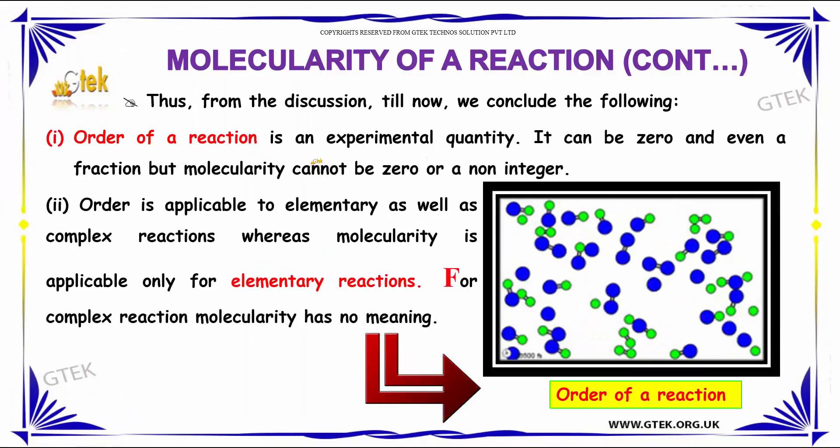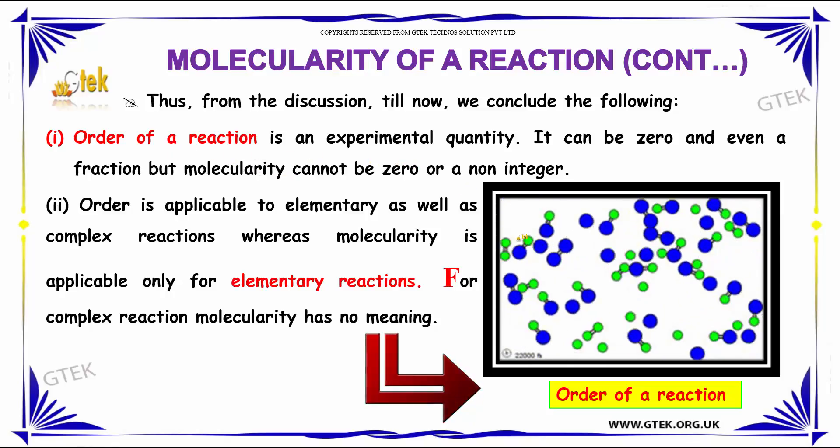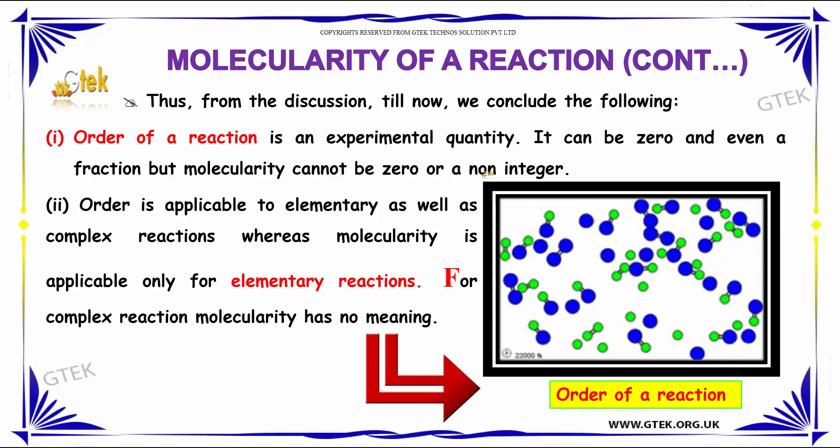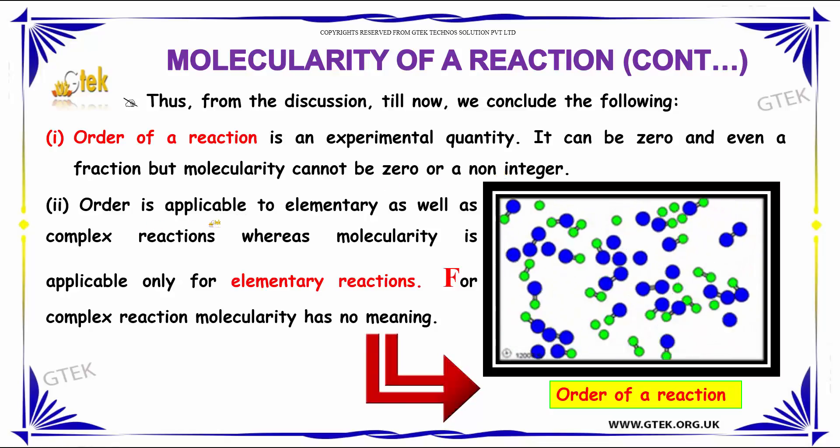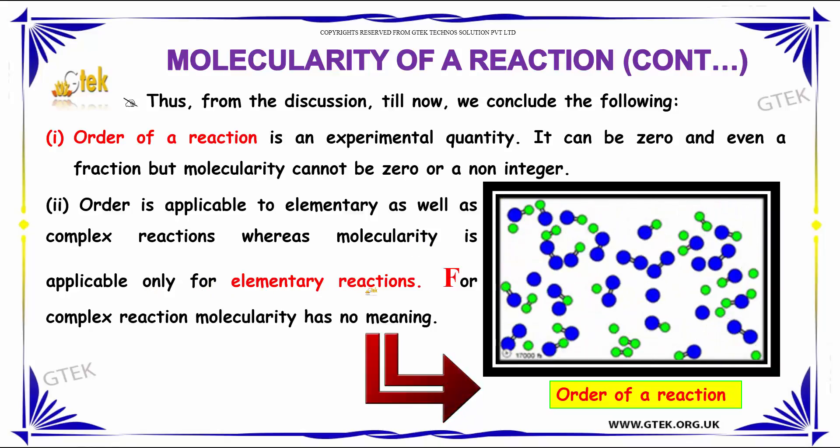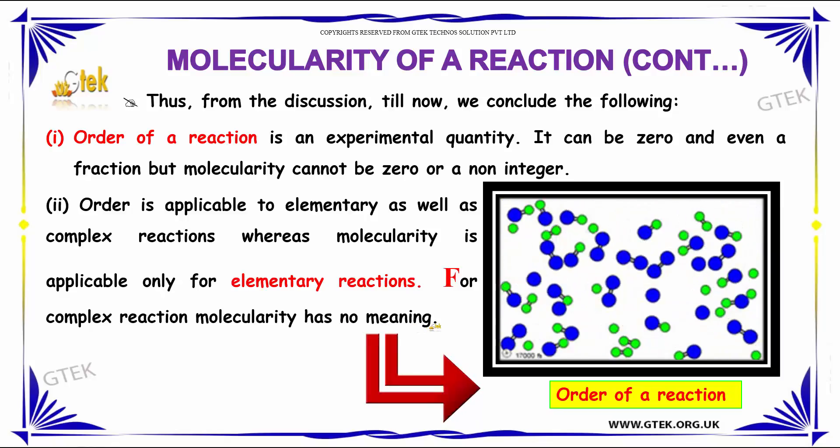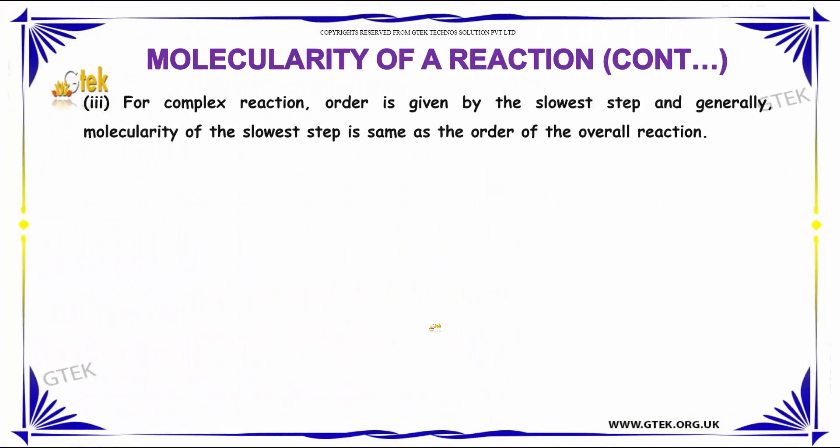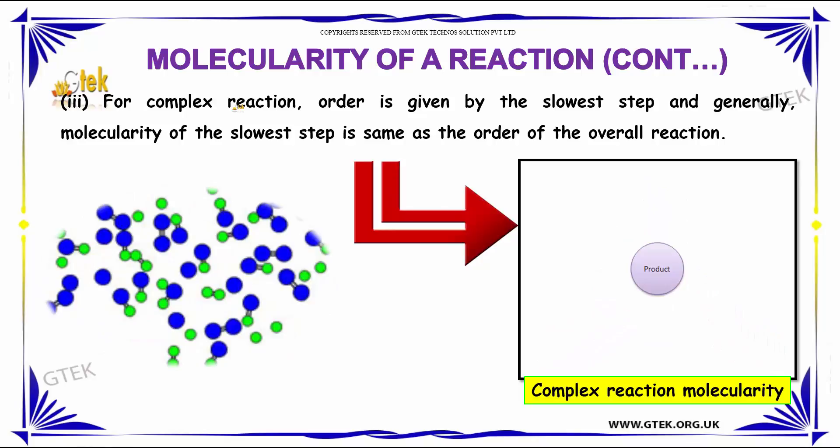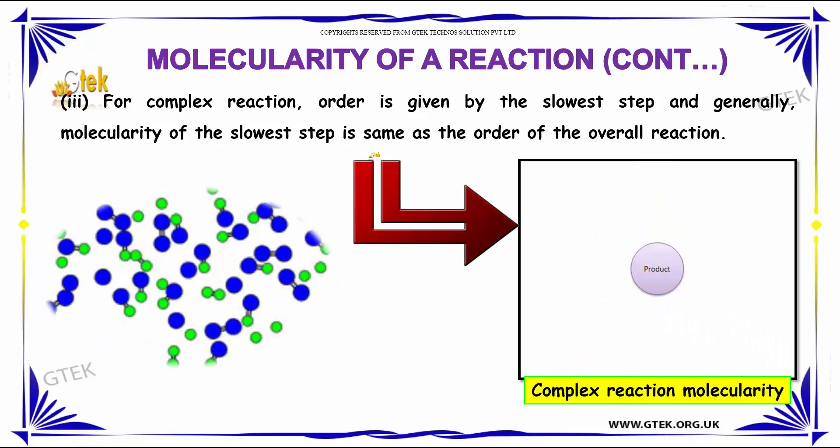From the discussion, we conclude the following. Order of a reaction is an experimental quantity. It can be zero or even a fraction, but molecularity cannot be zero or a non-integer. Order is applicable to elementary as well as complex reactions. Whereas, molecularity is applicable only for elementary reactions. For complex reactions, molecularity has no meaning. For complex reactions, order is given by the slowest step. Generally, molecularity of the slowest step is same as the order of the overall reaction.